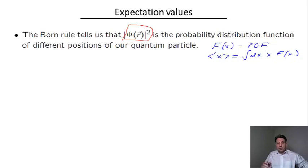By full analogy with this, we can define the mean value of a three-dimensional coordinate by integrating the absolute value of the wave function squared with the coordinate over all three-dimensional space. This is a natural definition of the mean position.